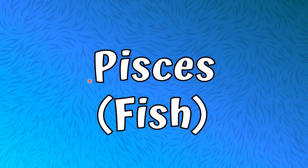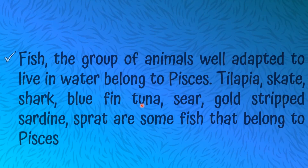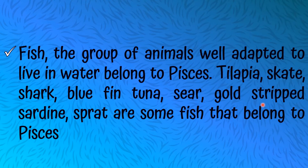Let's talk about our first type of vertebrate group: Pisces, or Fish. The group of animals well adapted to live in water belong to Pisces. Tilapia, skate, shark, bluefin tuna, seer, goldstripe, sardine, and sprat are some fish that belong to Pisces.